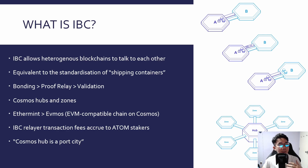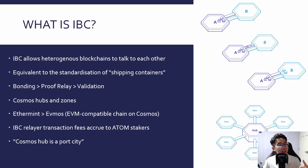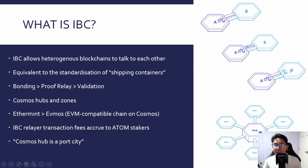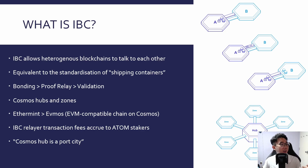How IBC works specifically: there are two blockchains A and B, and a three-step process. First is bonding — if you want to transfer tokens from blockchain A to blockchain B, you lock up and bond your tokens on blockchain A. Second is proof relay — a relayer submits proof to blockchain B that the tokens on blockchain A have been bonded and locked. Third is validation — blockchain B verifies the lock and then creates and mints the equivalent tokens on blockchain B. That in a nutshell is how IBC works and allows for the transfer of tokens.